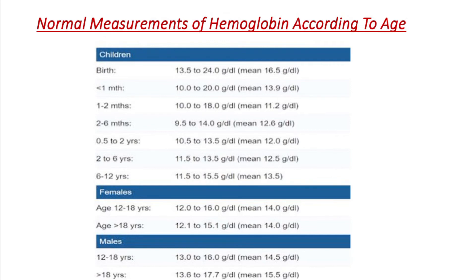For females in the adolescent period, aged 12 to 18 years, the normal hemoglobin level range is 12 to 16 gram per dL, with an average of 14 gram per dL.